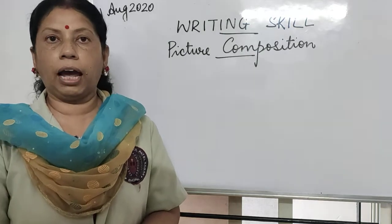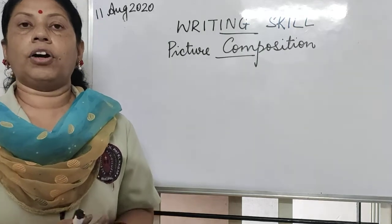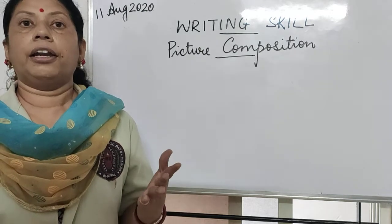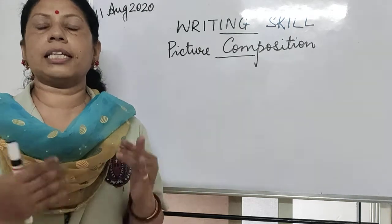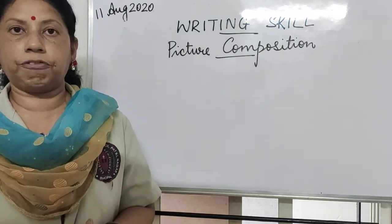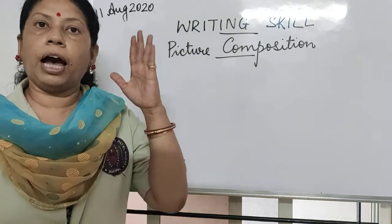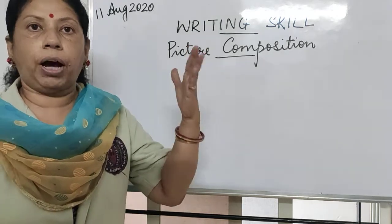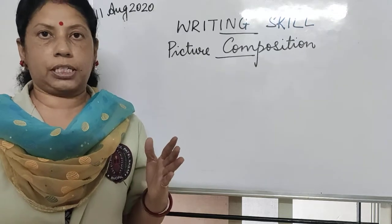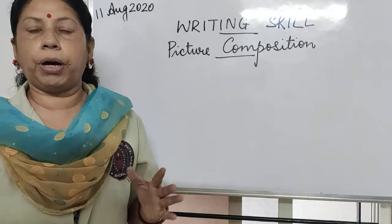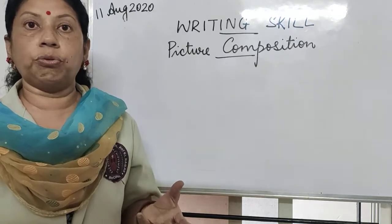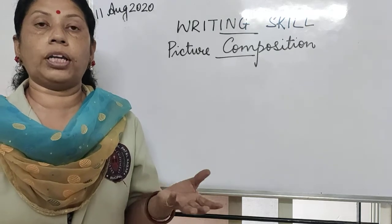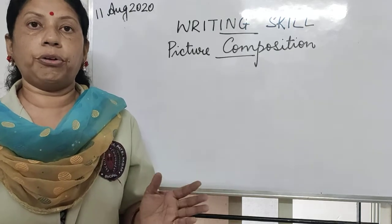So today let us try our hand on a topic like the park and see how many sentences we can make about a park. You have an imagination about a park. Think about a park or a garden — what do you normally see when you go to a park or garden?